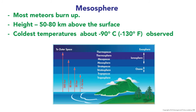The next layer is the mesosphere, where most meteors burn up. Its height is about 50 to 80 kilometers above the Earth's surface. It has the coldest temperature of about minus 90 degrees Celsius or minus 130 degrees Fahrenheit. An altitude diagram shows the troposphere at 7 to 16 kilometers, the stratopause at 50 kilometers, and the mesopause at 80 kilometers.